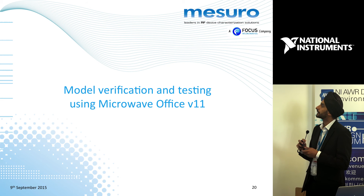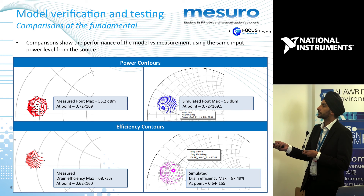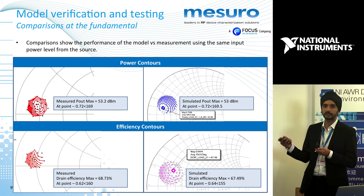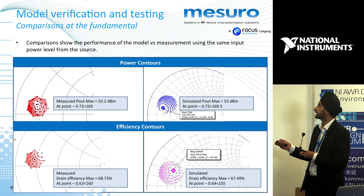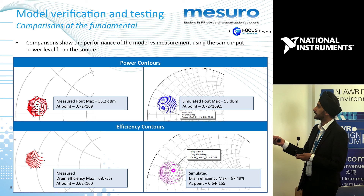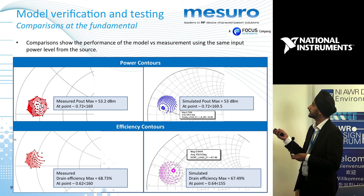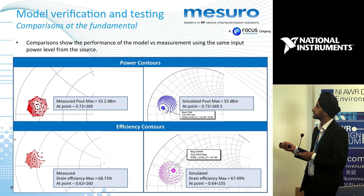Let me get to the model verification part. This data I'm showing here was not used to generate the model — we did separate verification measurements to see how the model performs against measurements. For example, on this slide we got to within 0.2 dB in terms of output power and within 1% of efficiency.